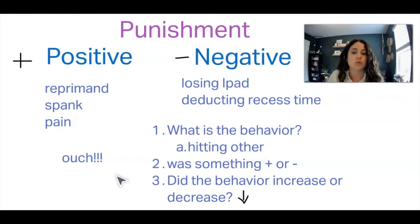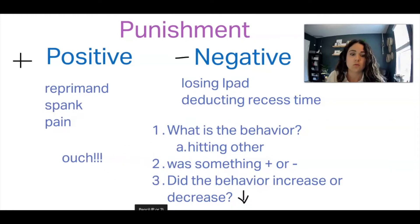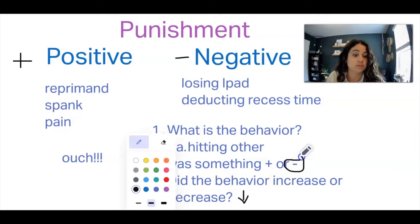We want to use our one-two-three system, just as we would for reinforcement scenarios. The first question we ask when dissecting a scenario is: what's the behavior? So let's say Neil engages in hitting behavior, and when he does we take away the iPad, and in the future he doesn't hit. What's the behavior? Hitting others. Was something added or taken away? The iPad was taken away, and in the future he does not hit.